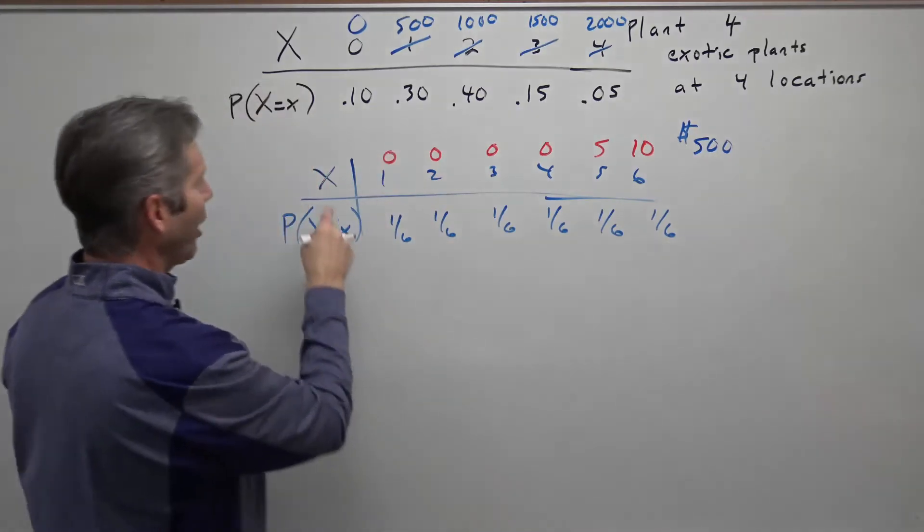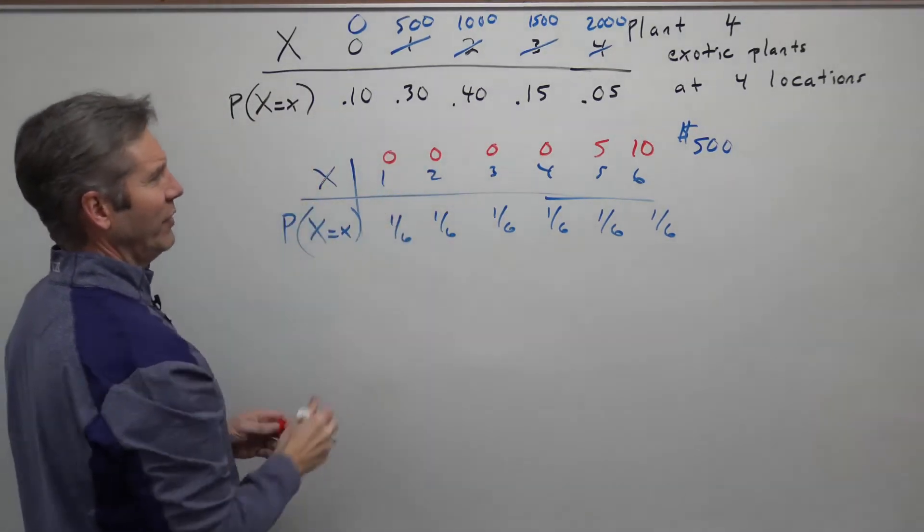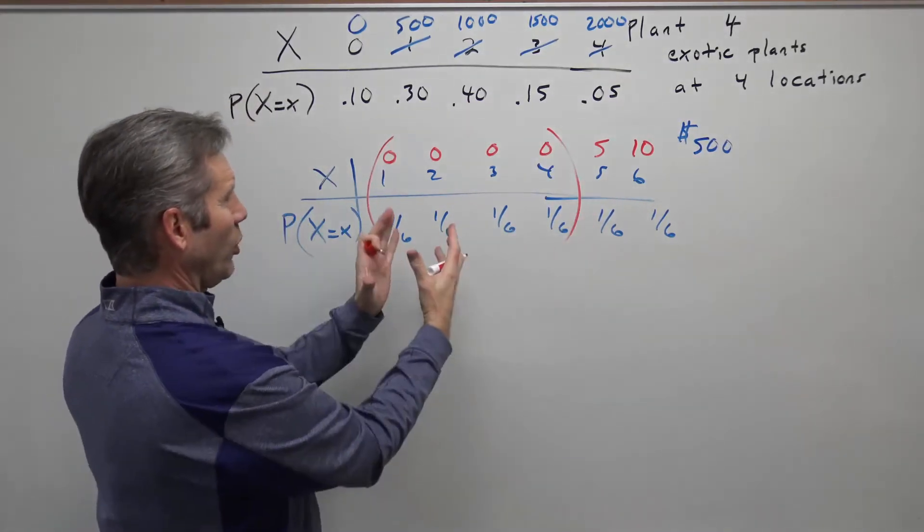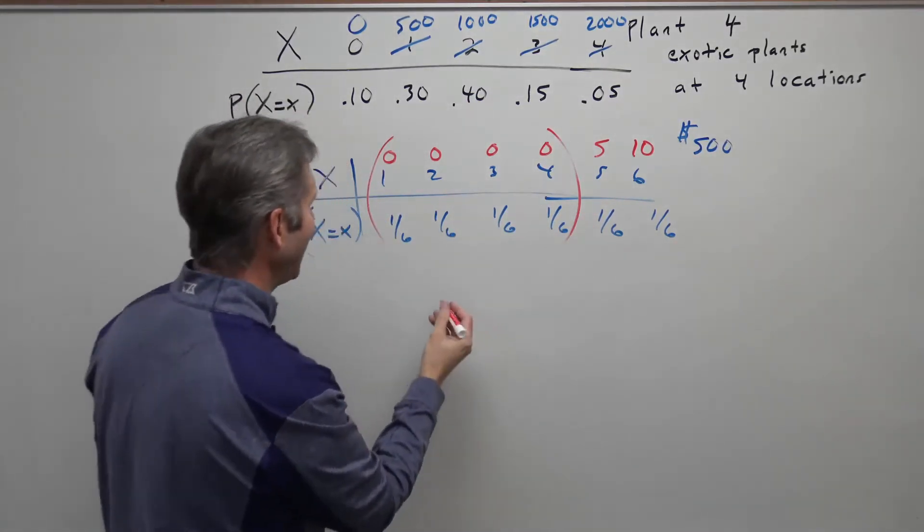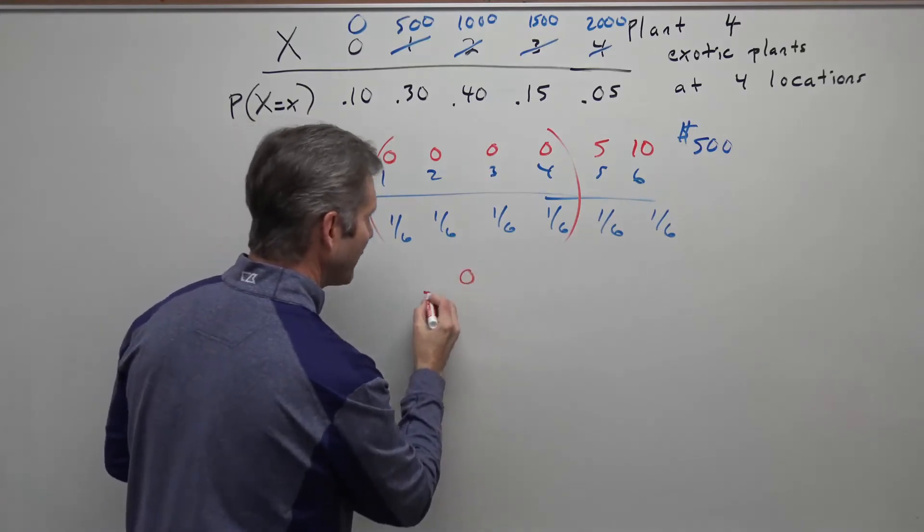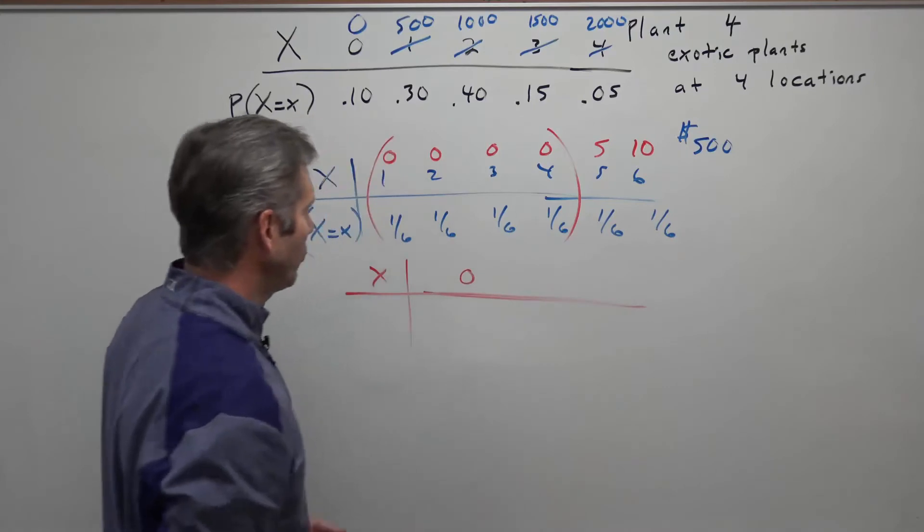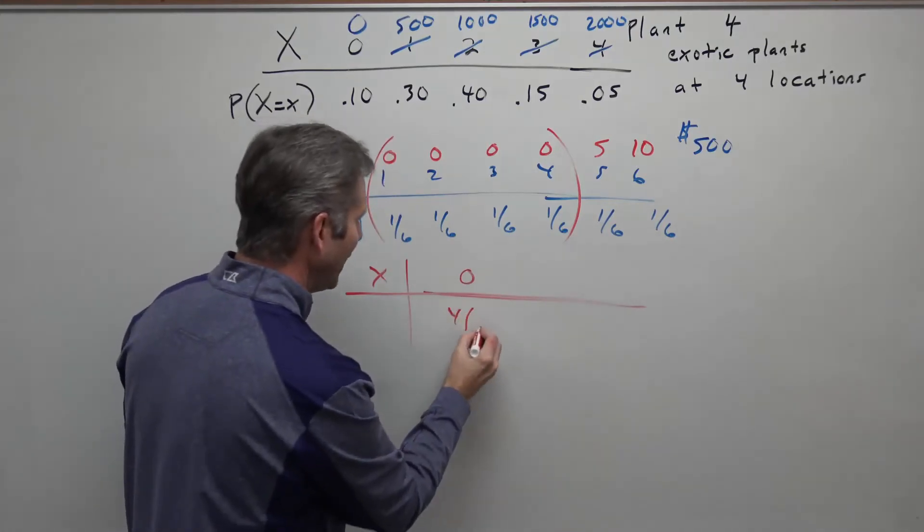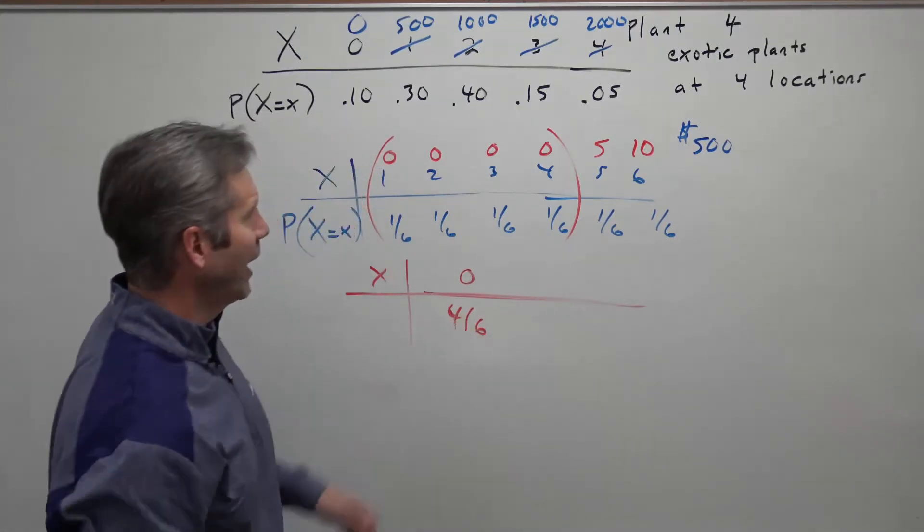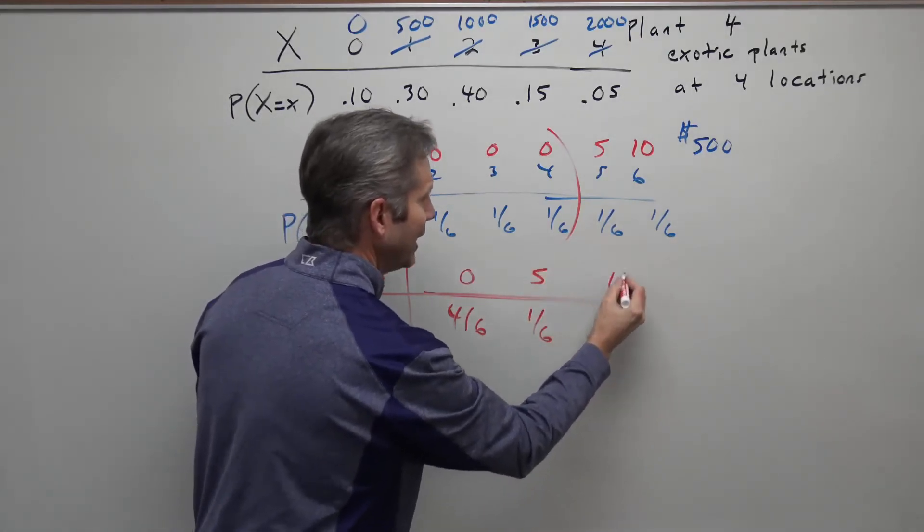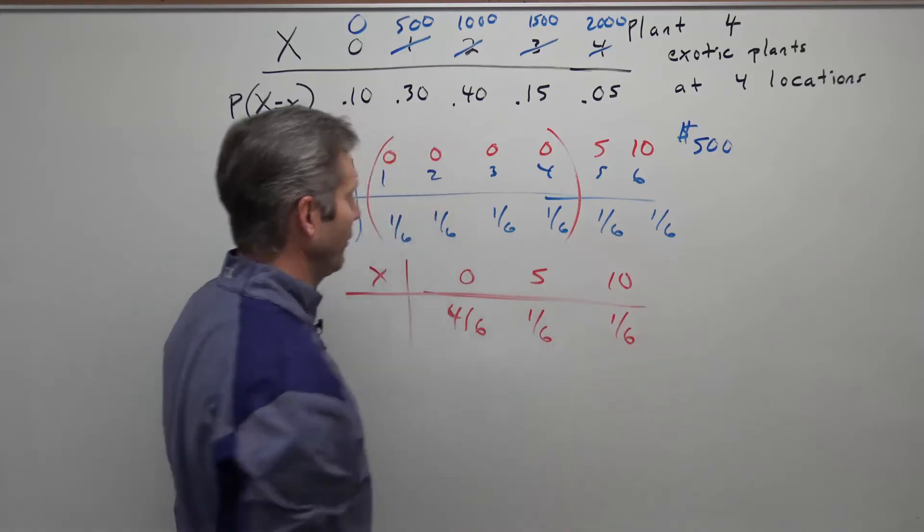Well, now the random variable takes on the points that are assigned. So now all of these simple events combine to give you one event where 0 points would be earned, and that would be a four-sixths chance of that happening. The probability of getting 5 points would be one-sixth, and the probability of getting 10 points would also be one-sixth.